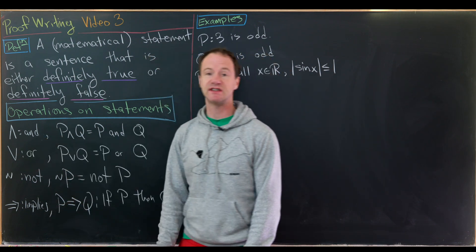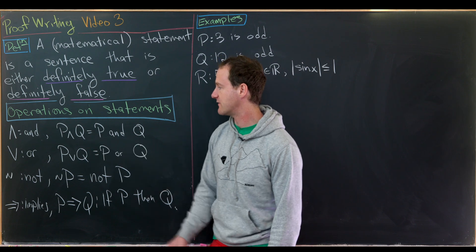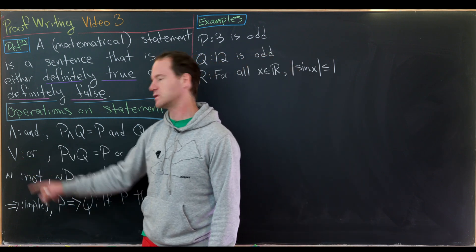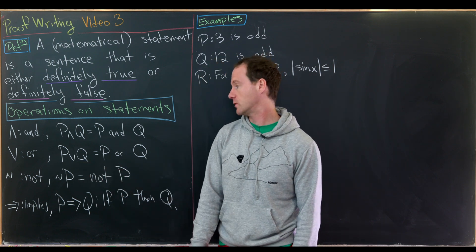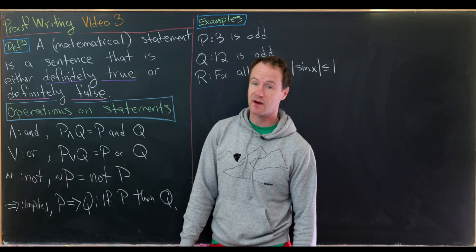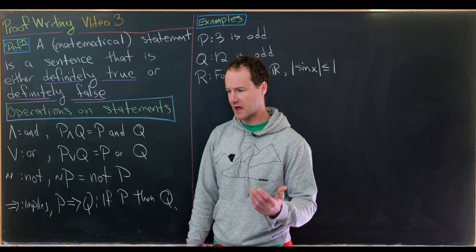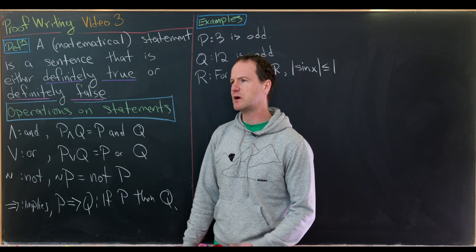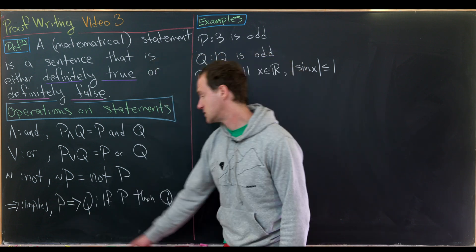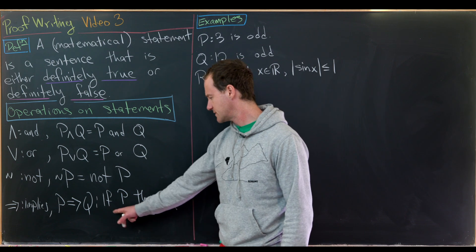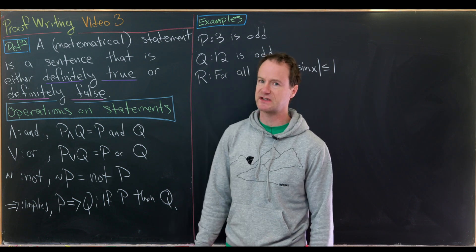We read p ∧ q as 'p and q,' p ∨ q as 'p or q,' ¬p as the negation of p — and later we'll talk about negating complicated statements — and p → q as 'p implies q' or 'if p then q.' There are also lots of other ways to write the implication, which we'll see later in the video.